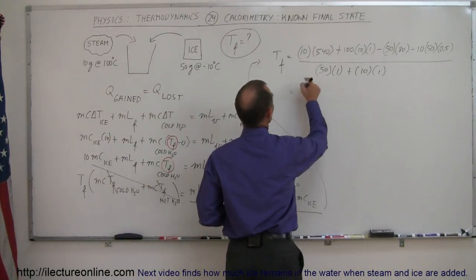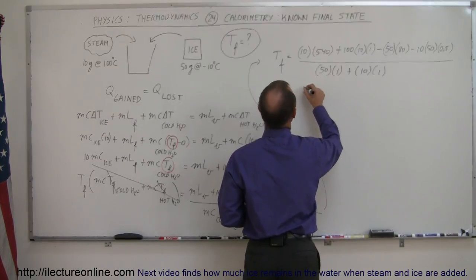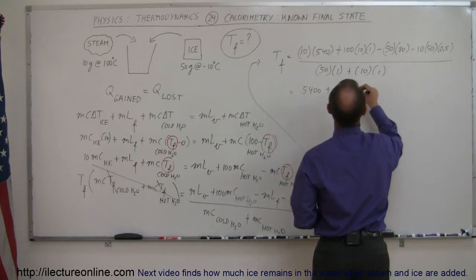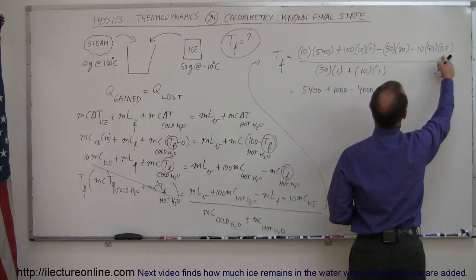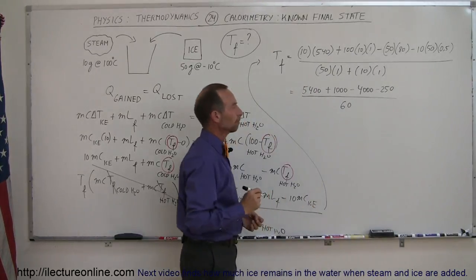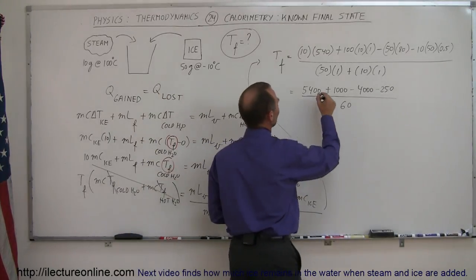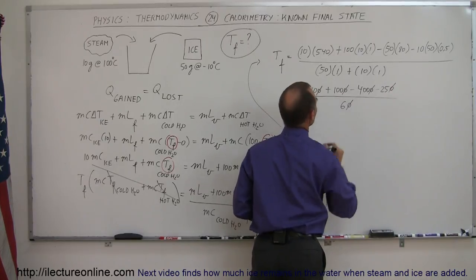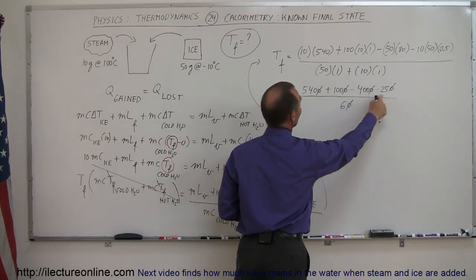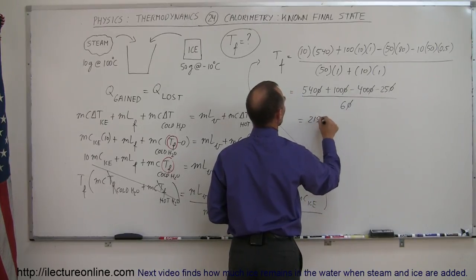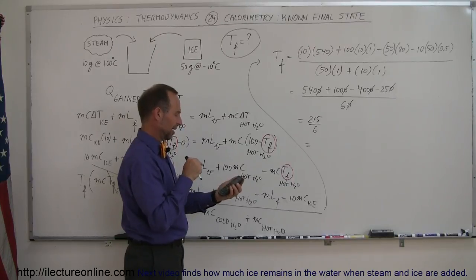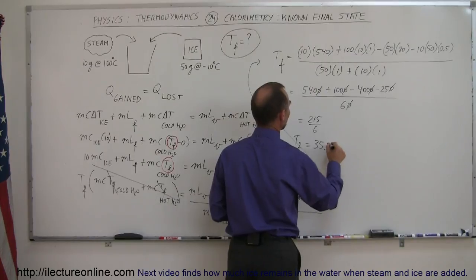Simplifying: 10 × 540 = 5,400; 100 × 10 = 1,000; 50 × 80 = 4,000; 10 × 0.5 × 50 = 250. The denominator is 50 + 10 = 60. Dividing numerator and denominator by 10: (540 + 100 − 400 − 25) / 6 = 215 / 6. Using a calculator, 215 ÷ 6 = 35.8 degrees. So T_final is 35.8 degrees centigrade.